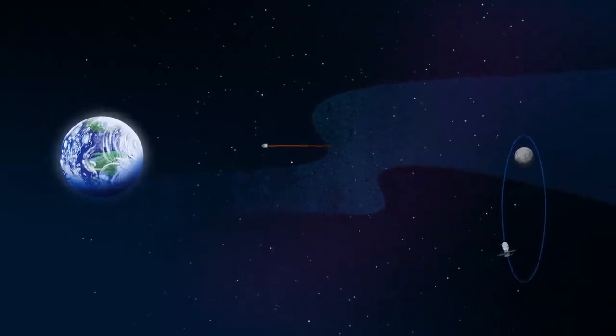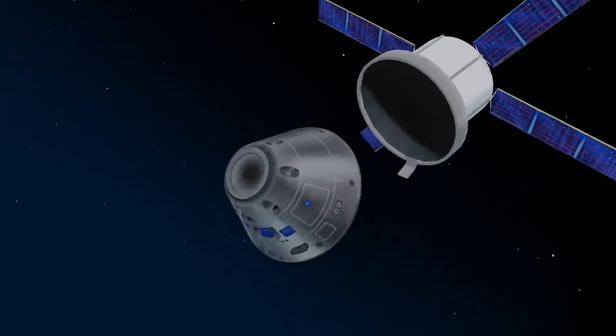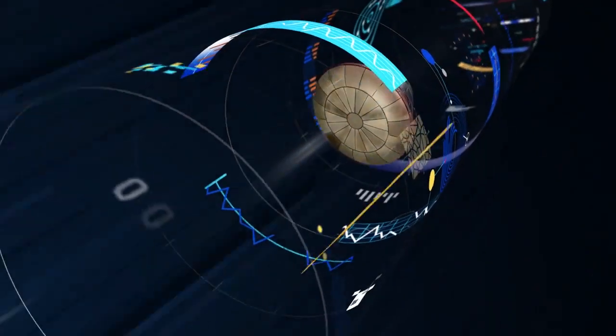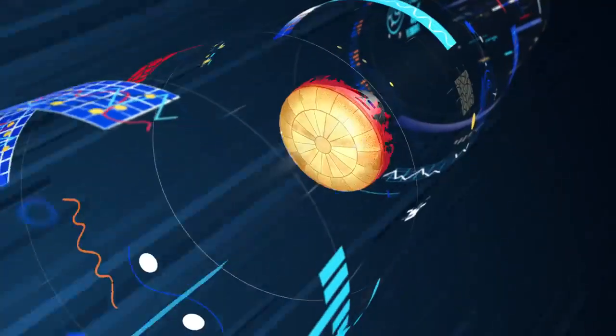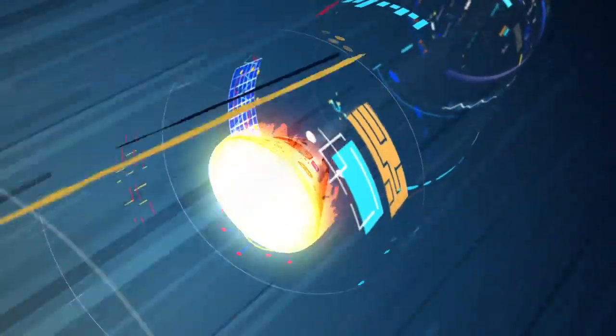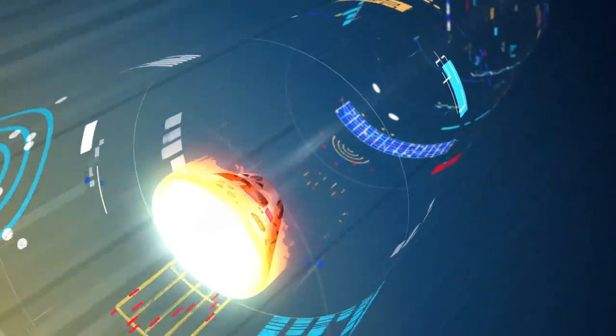As they near the end of this journey, the service module is released, and the crew module is oriented heat shield first. Entering Earth's atmosphere at 25,000 miles per hour, the friction of air slows Orion considerably, while also subjecting it to temperatures of 5,000 degrees.